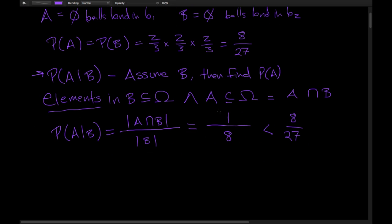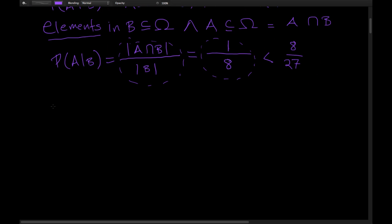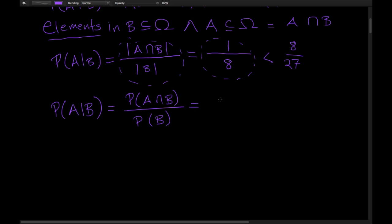We were able to say this because each element of the sample space is equally likely. A better way of writing this is: the probability of A given B equals the probability of A∩B divided by the probability of B. The probability of A∩B — that no balls land in bin 1 and no balls land in bin 2 — is 1/27. The probability of B is 8/27, and that gives us the same answer.